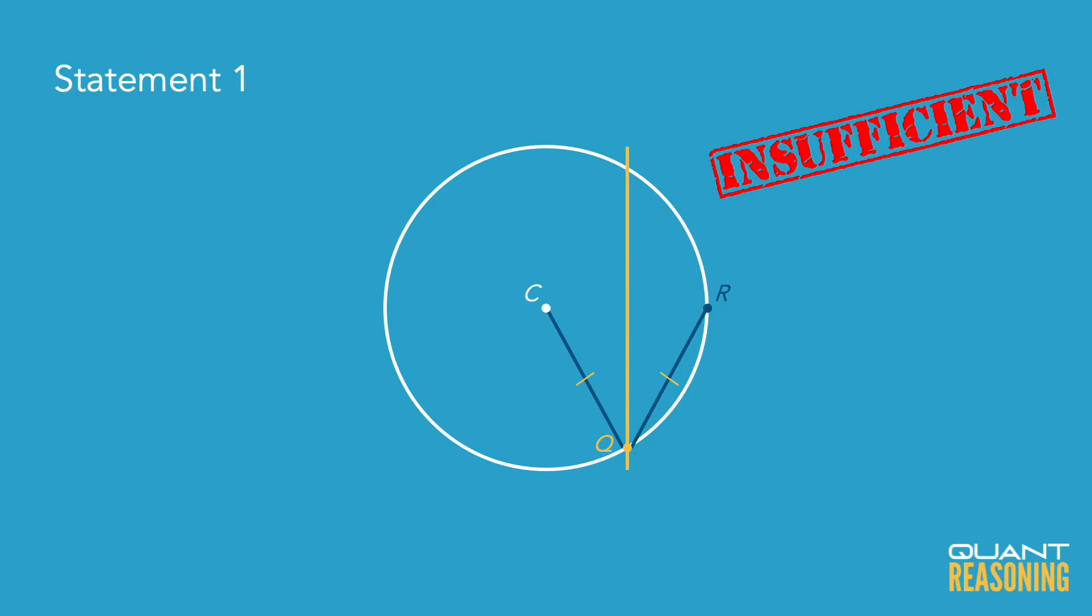So statement one is not sufficient on its own, and we should eliminate the answer choices that claim that it is. So A and D are gone and we're down to BC and E.